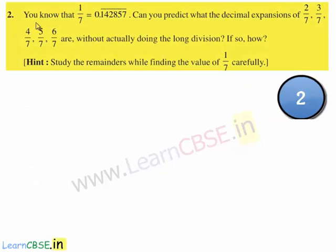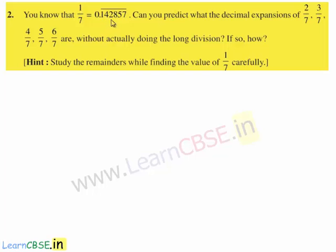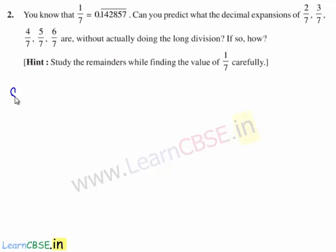Now, let us move on to the second question. The question is: you know that 1 by 7 is equal to 0.142857 bar. Can you predict what the decimal expansions of 2 by 7, 3 by 7, 4 by 7, 5 by 7, and 6 by 7 are without actually doing the long division? If so, how? So, we shall move on to the solution.